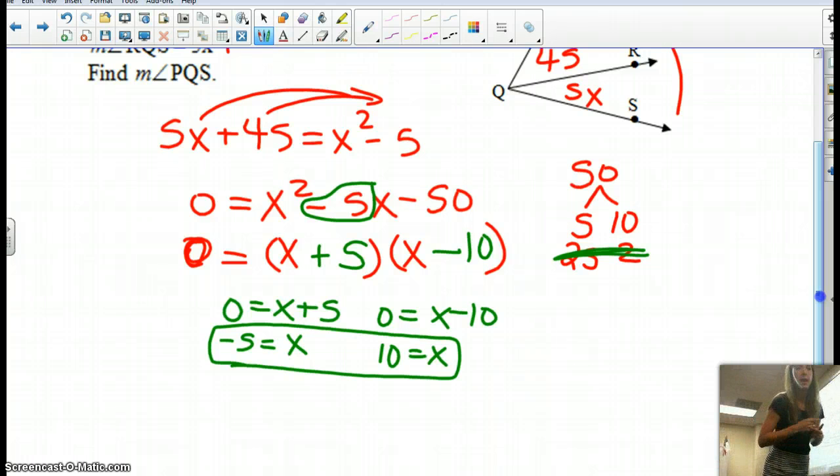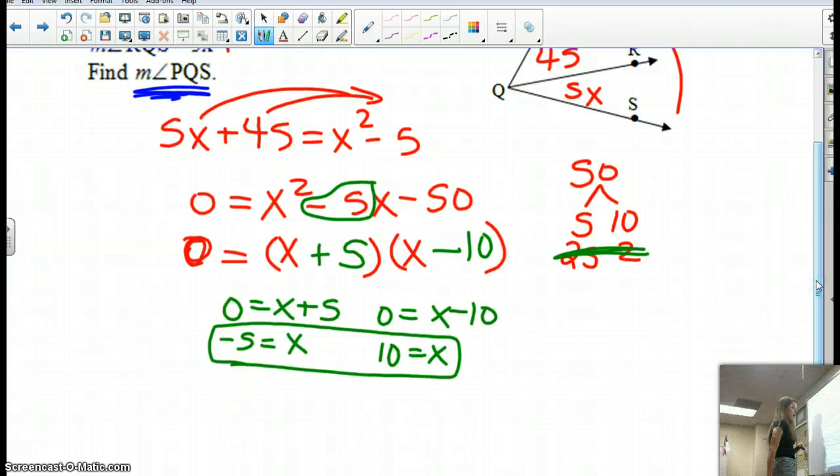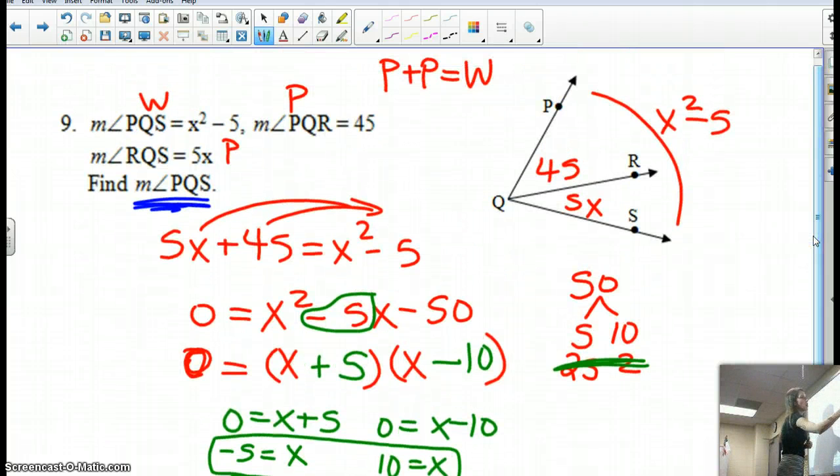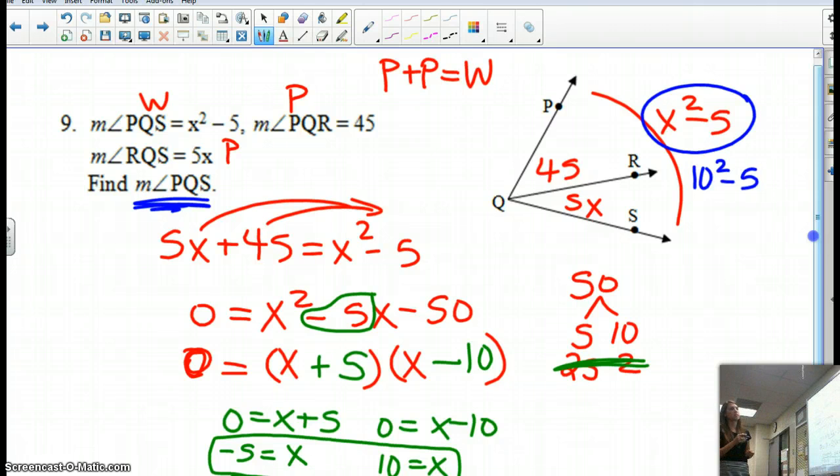We're not going to stop there because we have to make sure we have to see if those answers are valid. So let's plug them in. What are we looking for? We're looking for angle PQS. So let's work with the positive one first. We've got 10. PQS is the whole angle. I'm going to plug 10 in here. 10 squared is 100 minus 5. So 10 squared is 100, 100 minus 5, that makes that a 95 degree angle.